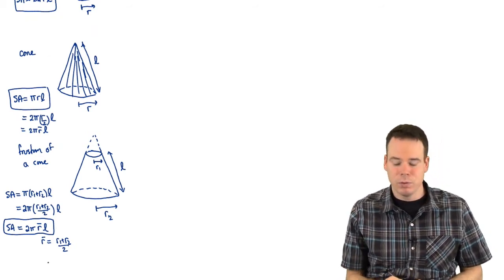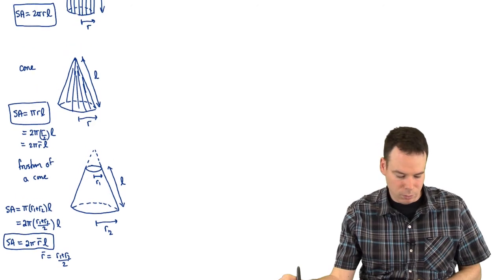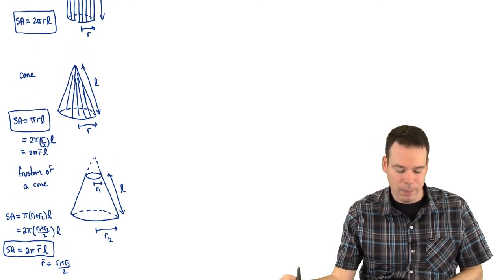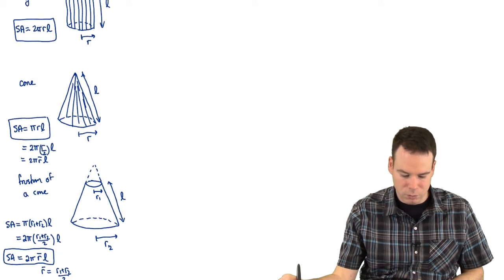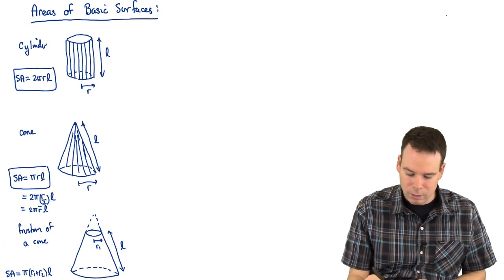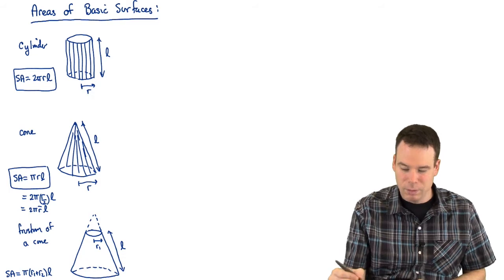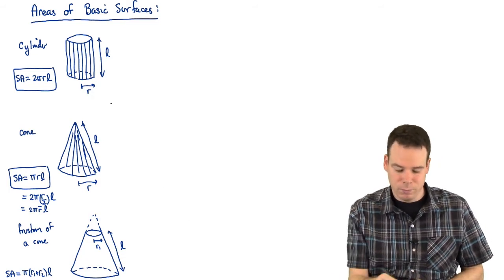So it's nice to think about the frustum of a cone having a surface area of this. Now of course by no means have I proven any of these things. I just discussed what the formulas are we're trying to show and their connections with each other. Now let's go ahead and show that each of these formulas is valid. For the cylinder, I'm actually going to do the same thing in pretty much all these cases.